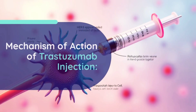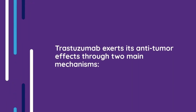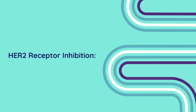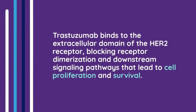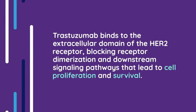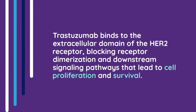Moving on to the mechanism of action of trastuzumab injection. Trastuzumab exerts its anti-tumor effects through two main mechanisms. The first is HER2 receptor inhibition, where trastuzumab binds to the extracellular domain of the HER2 receptor, blocking receptor dimerization and downstream signaling pathways that lead to cell proliferation and survival.